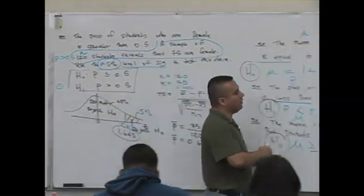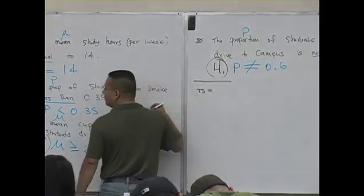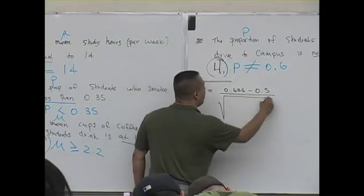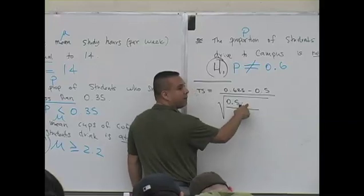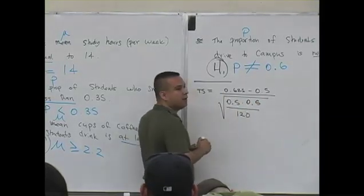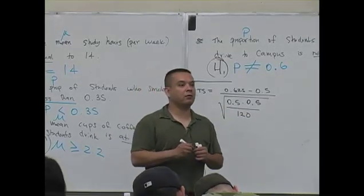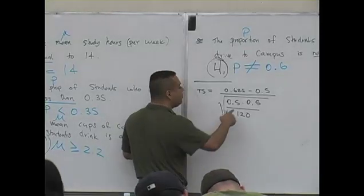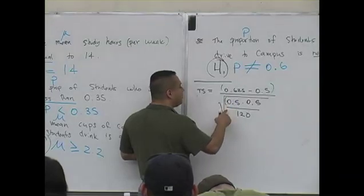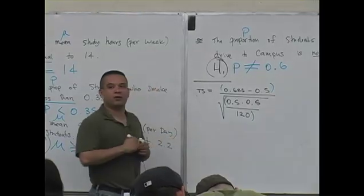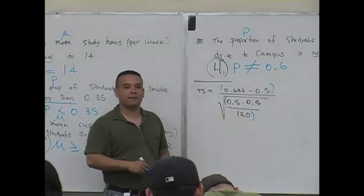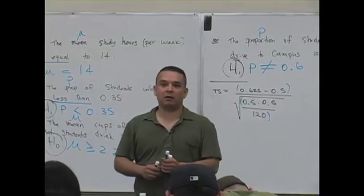Now I'm going to continue over here. The test statistic is going to be 0.625 minus 0.5 divided by the square root of 0.5 times 0.5 divided by 120, the sample size. When I say that you just enter this in your calculator and hit equals, that's what you do. Put a parentheses around the numerator and put a parentheses around this first value and around the 120 at the end. If you do it this way, compute your test statistic, then it's going to be sort of painless.